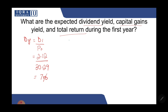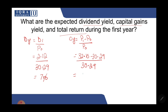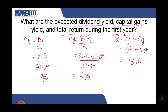The capital gain yield formula is (P1 minus P0) divided by P0. P1 is 32.10 and P0 is 30.29, which gives 6%. The total return is dividend yield plus capital gain yield: 7% plus 6% equals 13%, which matches the required rate of return.